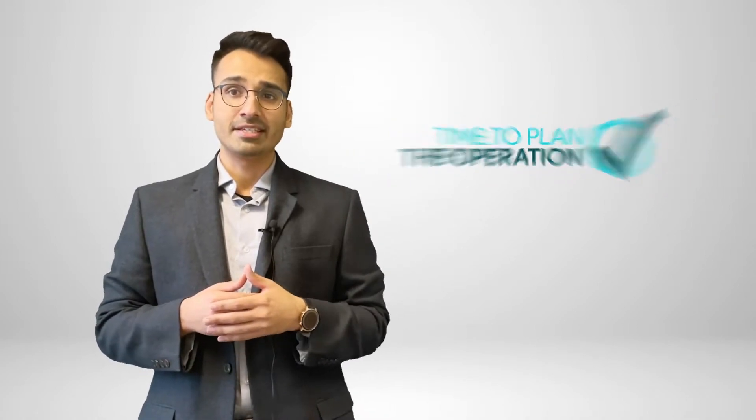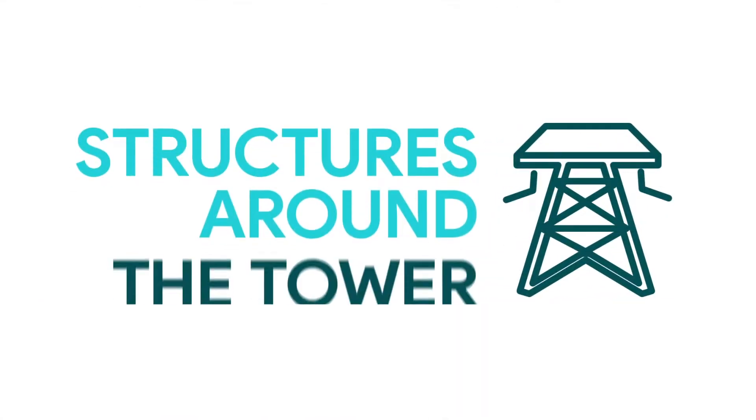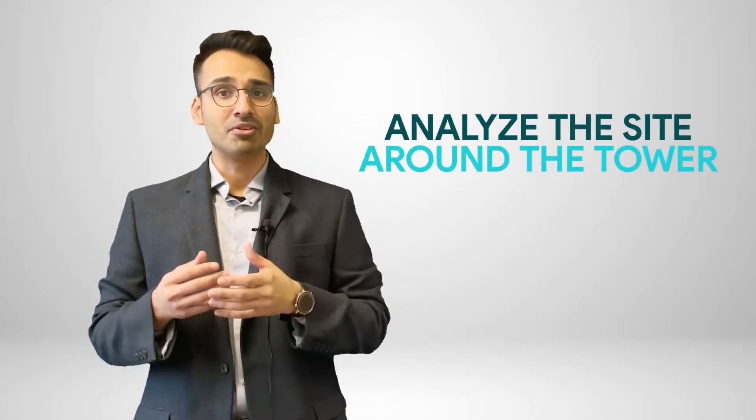Every operation will present its unique challenges, and in this video I will cover the three main challenges you might come across. The first challenge is that you might find structures all over the tower. Towers come in different shapes and forms, whether it's a cell tower, water tower, cooling tower, etc., and each one presents its unique set of challenges. No matter the structure, it's important to analyze the site around the tower for different obstacles to understand the operating corridor for your drone.